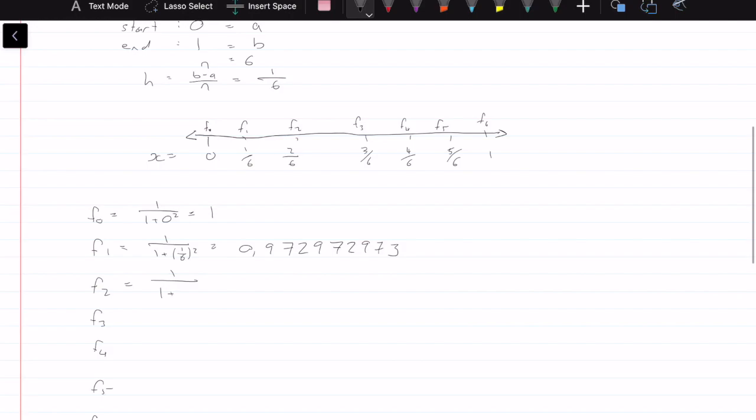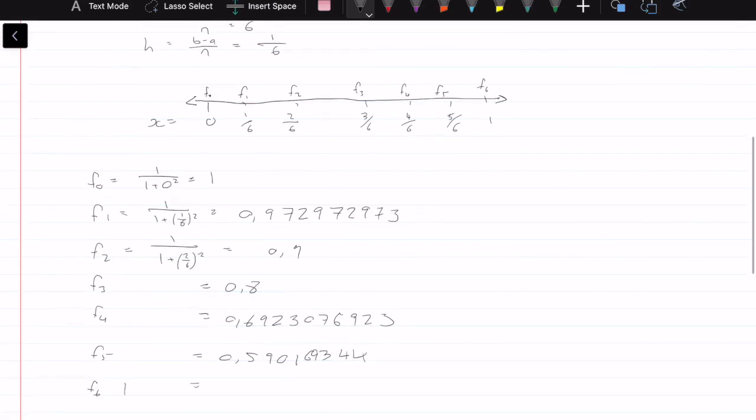For 2 over 6 this time squared, we're going to come up with 0.9 for that. This we're going to come up with 0.8. We're going to come up with 0.6923076923. We're going to come up with 0.5916393449344, and f6 is 1 over 1 plus 1 squared, which is obviously equal to a half.